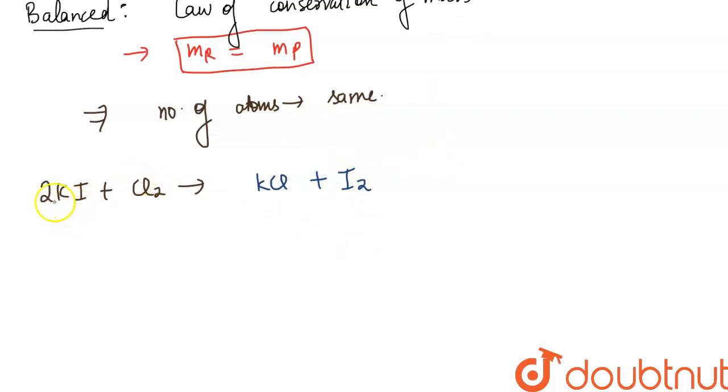On the reactant side, you have potassium K, 2 atoms, and here it is one atom, so here it becomes 2. Now you have 2 atoms of chlorine, 2 atoms of chlorine, 2 atoms of iodine, which means your equation is balanced. Your products will be KCl and I2. The equation will be balanced, so this is your desired answer.